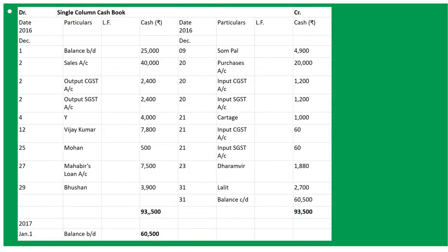Yes, it's a single column cash book. The format is: date, particulars, ledger folio, cash on both debit and credit sides. Voucher number is also included. December 1st, 'To Balance b/d' with rupees 25,000 as opening balance. December 2nd, cash sales - 'To Sales Account' 40,000.